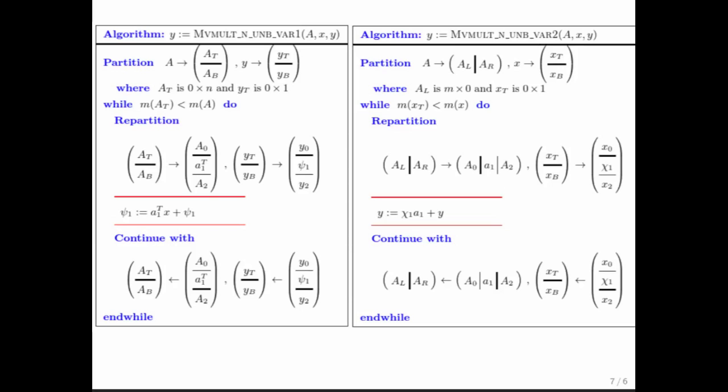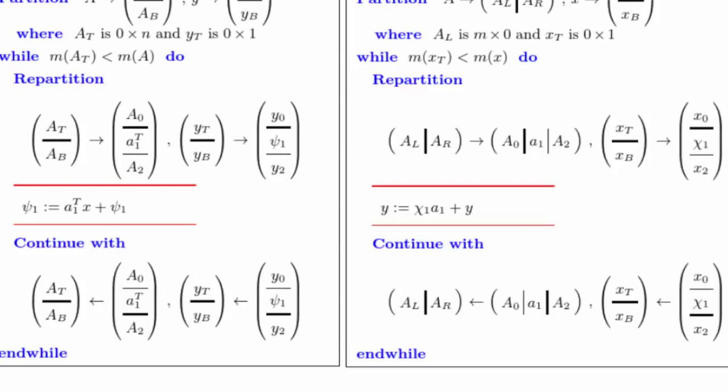And we can also put the two algorithms in flame notation next to each other. And I guess the thing you really notice is that in one algorithm, you expose rows. In the other algorithm, you expose columns. One algorithm performs dot products, while the other algorithm performs XP operations.